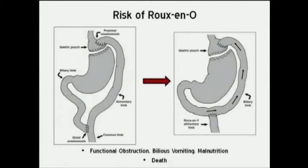In malrotation, there is a risk of identifying the terminal ileum in the normal anatomical area of the ligament of Treitz. If this occurs, a Roux-en-O is constructed with an anti-peristaltic biliary limb, leading to functional obstruction, bilious vomiting, malnutrition, and if unrecognized, eventually death.